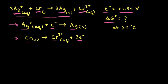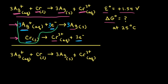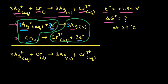Next, we need to figure out how many electrons are being transferred. In the reduction half-reaction, silver 1+ gains one electron, but in the oxidation half-reaction, solid chromium loses three electrons. We need to make the number of electrons equal, so we multiply the reduction half-reaction by a factor of three. When we add the reactants and products together, the three electrons cancel out, giving us the overall redox reaction. Therefore, n = 3.